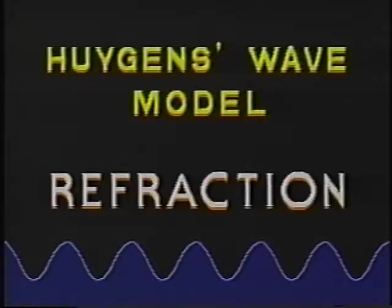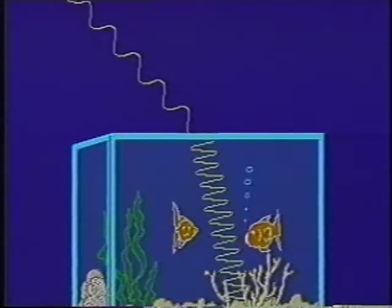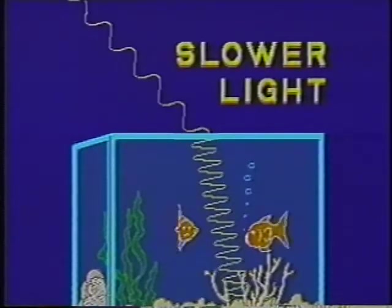Huygens also used water waves to explain refraction. When waves move from deep water into shallow water, they change direction and slow down. The result is a change in the direction of wave propagation towards the normal. In much the same way, a beam of light changes direction as it passes from air into water or glass. Huygens reasoned that if light is a wave, since it bends towards the normal, it must move slower in the new medium.